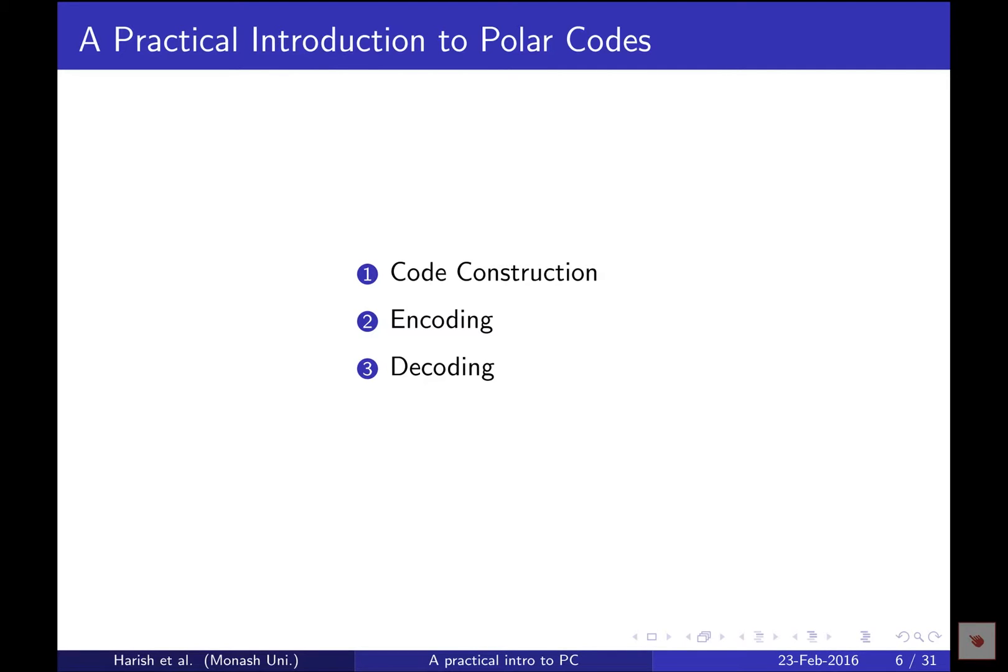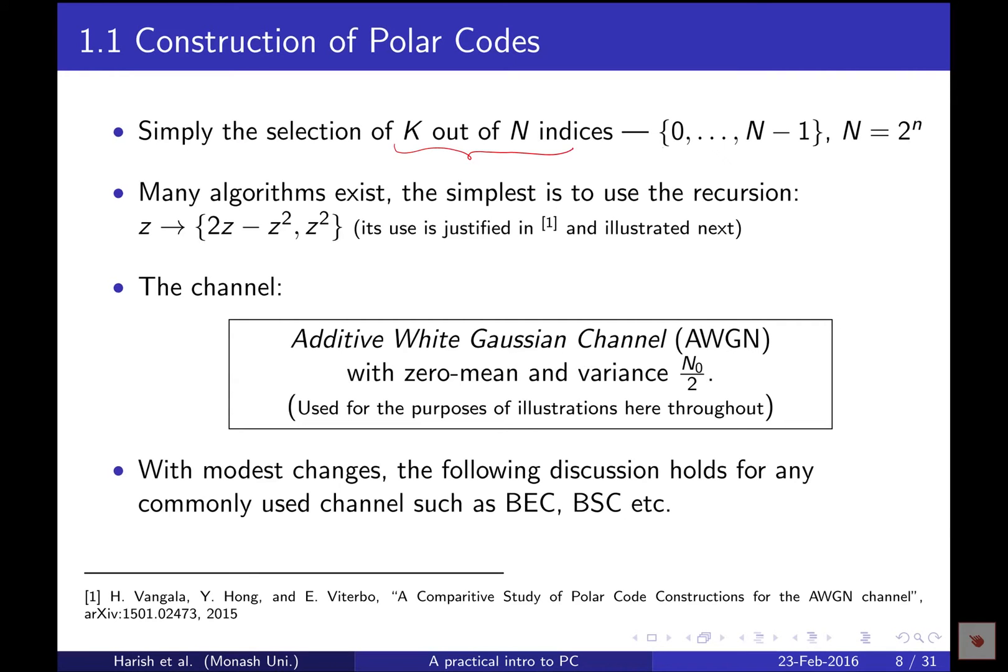Construction can be explained in a very simple way. It is nothing but selecting K indices out of N indices.